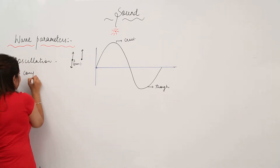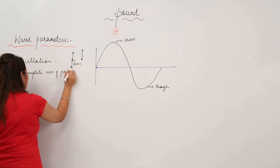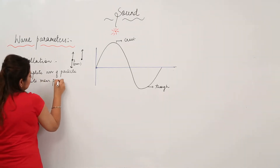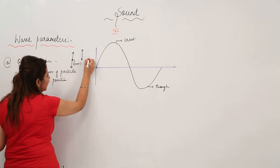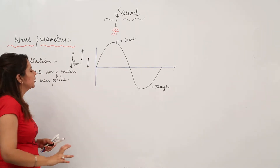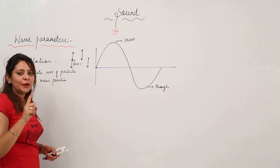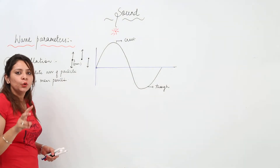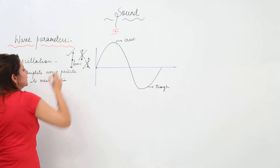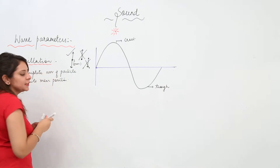So the complete movement of a particle about its mean position is the oscillation. If I draw a wave showing a crest and a trough, each wave consists of one crest and one trough. So a complete wave comprises one crest and one trough — that is one complete oscillation. Oscillation is the complete movement of a particle about its mean position.